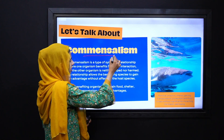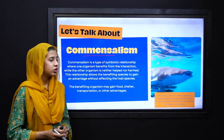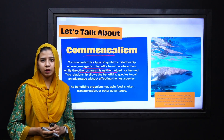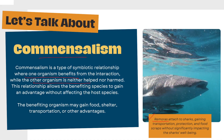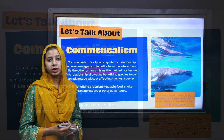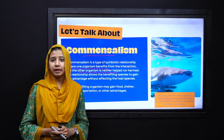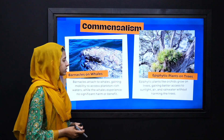Next, we move to our second type, which is commensalism. Dear students, keep in mind that commensalism is a type of symbiotic relationship in which one partner gets benefited, whereas the other neither gets helped nor harmed. An example is remoras attached to sharks — the remoras get protection, transportation, and food scraps for nutrition, but the sharks receive no harm.